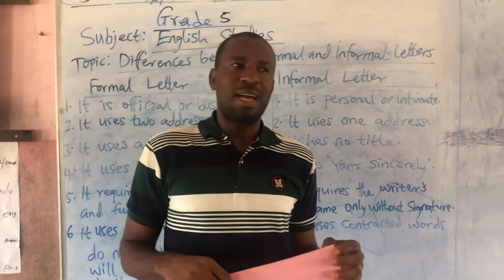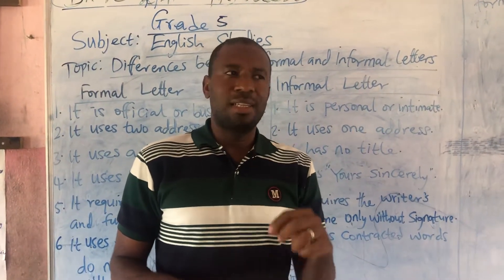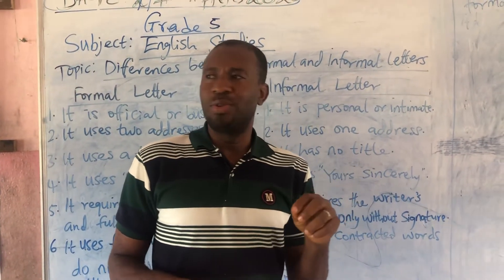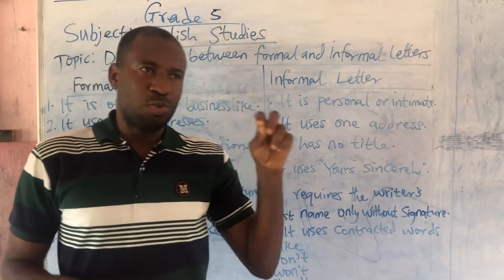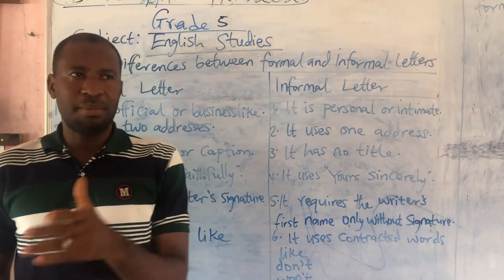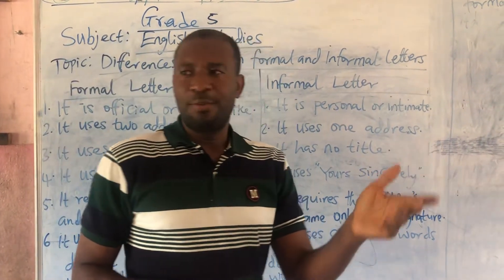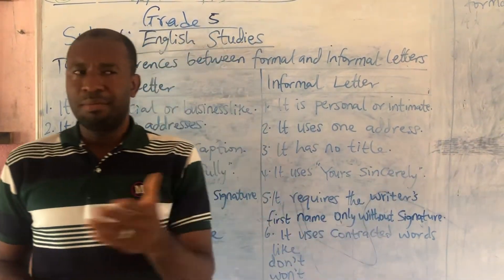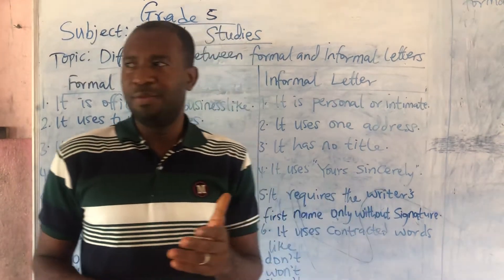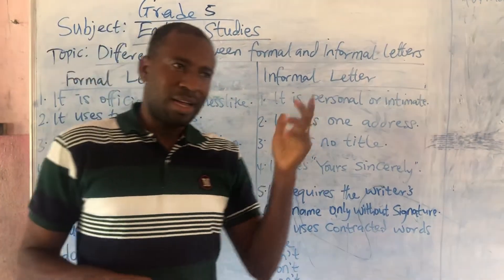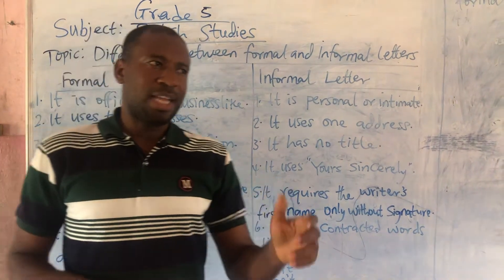An informal letter is a personal letter that is written to somebody that is very close to the writer. Examples are letters to your father, mother, brother, sister, niece, nephew, cousin, auntie, uncle, friend, classmate, etc.